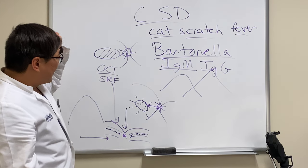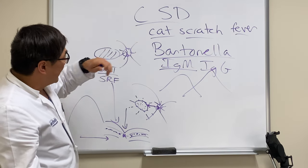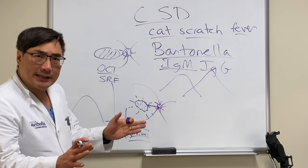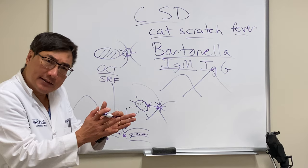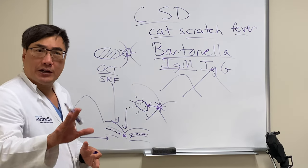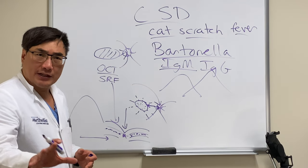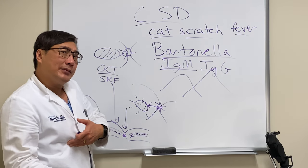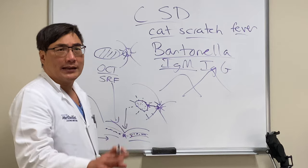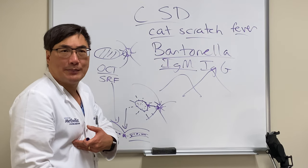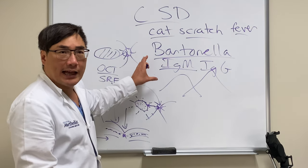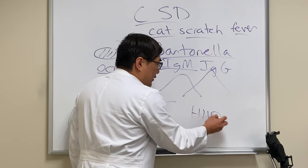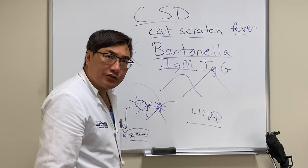There's no proof that treatment actually makes a difference; however, you can give antibiotics — it shortens the course of the disease. The one exception is if the patient is immunosuppressed. HIV-positive patients can get bacillary angiomatosis and liver involvement, and we don't want to get peliosis hepatitis. These are potentially life-threatening manifestations of the Bartonella organism in HIV patients, so in HIV-positive patients we're going to treat it.